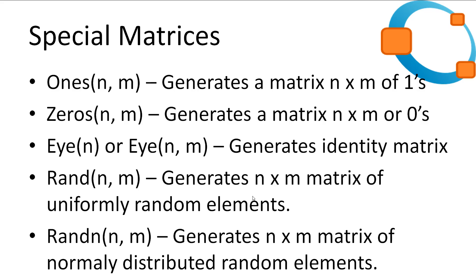These built-in functions are used to generate useful or common matrices. We have the ones function, which takes N and M and generates an N-by-M matrix of ones. Zeros does the same thing but with zeros. The eye function with argument N or N and M generates an identity matrix — that's a matrix with a diagonal of ones. rand(N, M) generates an N-by-M matrix of uniformly random elements. And randn(N, M) generates an N-by-M matrix of normally distributed random elements with a standard deviation of 1.